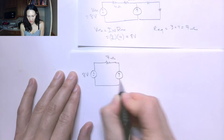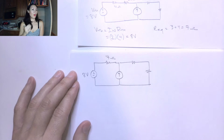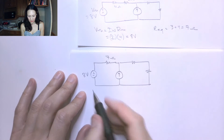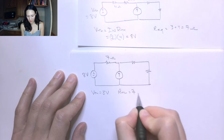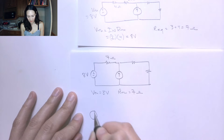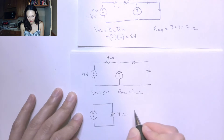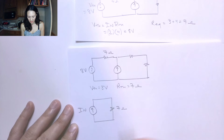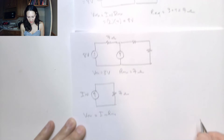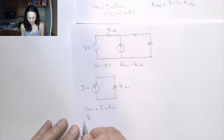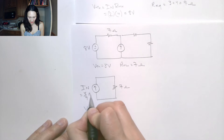I still have a current source and two resistors on the right side. I'm going to do another source transformation. My V-Thevenin is 8 volts and my R-Thevenin is 7 ohms, so I replace this with a current source in parallel with R-Thevenin. This is still 7 ohms. Finding I-Norton using Ohm's law: V-Thevenin equals I-Norton times R-Thevenin, so 8 divided by 7 equals I-Norton, giving 8/7 amps.